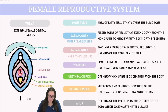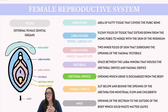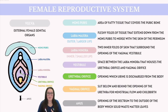The urethral orifice is located above the vaginal orifice and is the opening where urine is expelled from the body. The vaginal orifice, situated right below the urethral orifice, serves several key reproductive functions including the passage of menstrual blood, a receptor site for sperm, and part of the birth canal during labor. Although not part of the vulva, the anus is located posterior to the vaginal orifice and is the exit point for fecal matter. Each of these components is crucial for the reproductive and excretory functions of the female body, as well as providing protection against external irritants and infections.